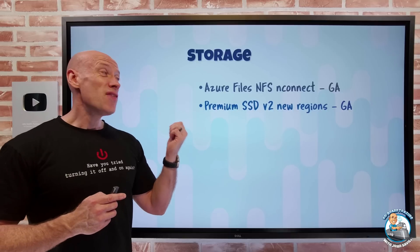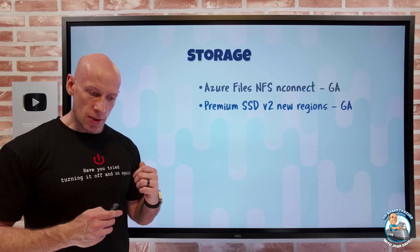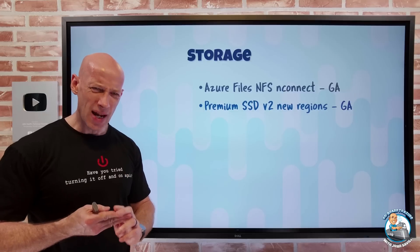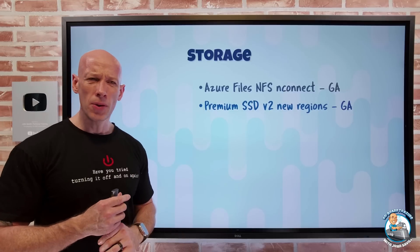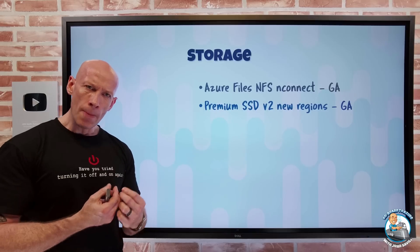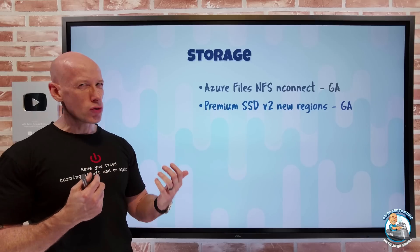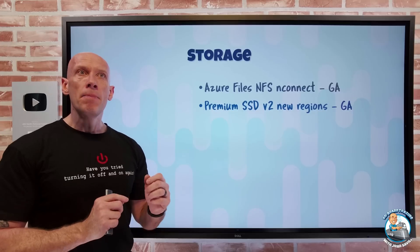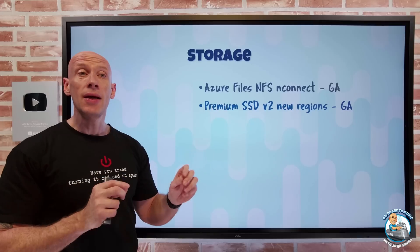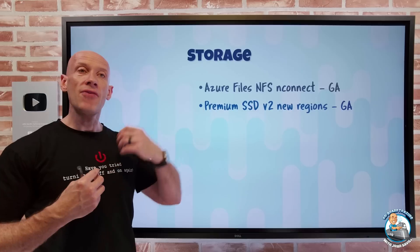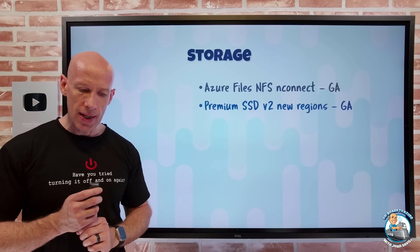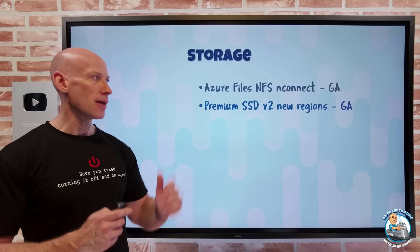Premium SSD V2 is now available in new regions: East US 2, North Europe, and West US 2. The big shift from V1 to V2 is that V2 acts more like UltraDisk - you have a capacity, but the IOPS and throughput are individual dials you can change dynamically, so you only have the IOPS and throughput you need at any given moment in time. So now you can use that in more regions.